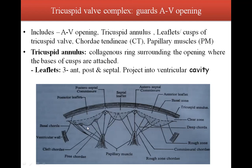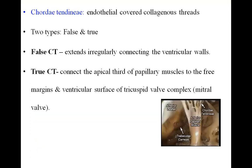There are three leaflets: anterior, posterior, and septal. The septal leaflet projects into the ventricular cavity between the anterior and posterior leaflets. Chordae tendineae are endothelially covered collagenous threads. They are of two types: false chordae tendineae, which extend irregularly connecting the ventricular walls, and true chordae tendineae, which connect the apical third of the papillary muscle to the free margins and ventricular surface of the tricuspid valve complex.